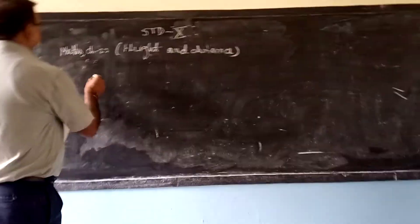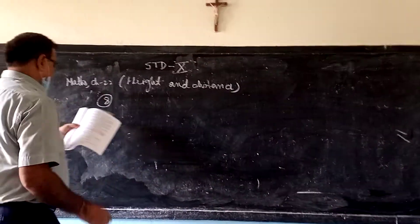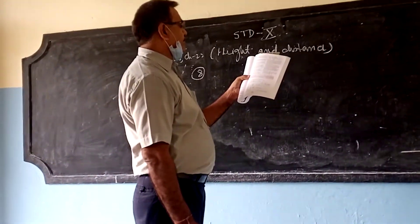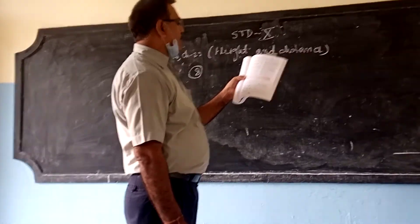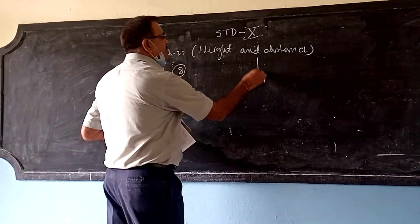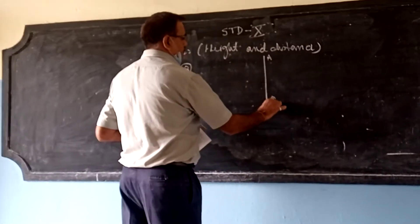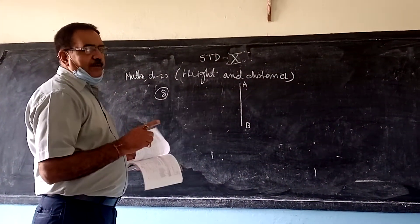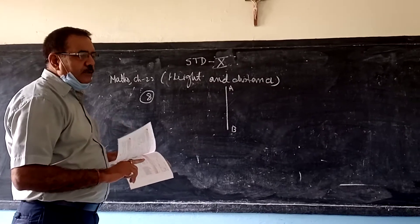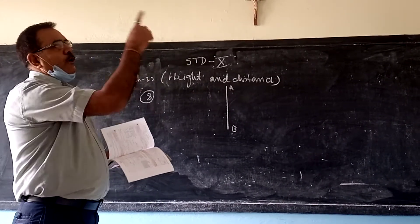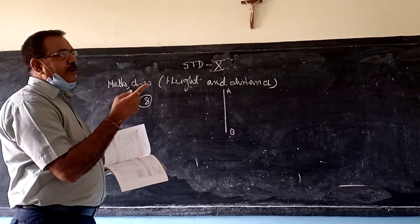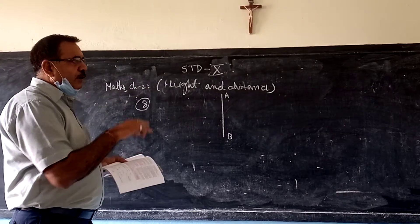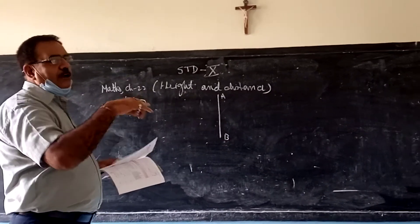Question number 8, part 22a. Angle of elevation of the top of an unfinished tower from a point at distance 80 meters from its base. Angle of elevation means when we see from bottom to top, this is known as angle of elevation. When we see from top to bottom, that is known as angle of depression.